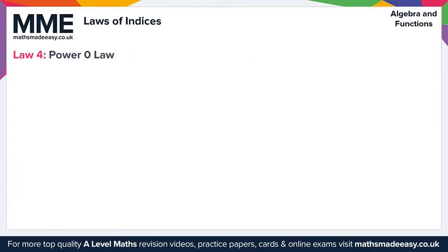The power 0 law is the simplest result in the laws of indices. It states that anything to the power of 0 is equal to 1. This applies to numbers — for example, 12 to the power of 0 is simply 1 — and also to algebra, so x to the power of 0 also gives us 1.